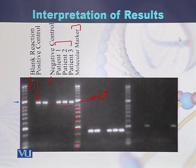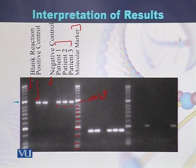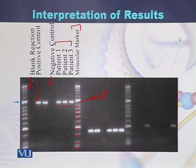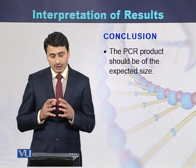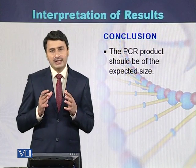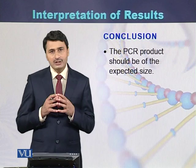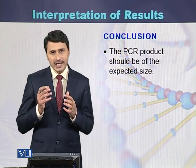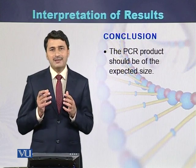While performing a PCR reaction, there should be a blank reaction, a positive control, a negative control, and a molecular marker. These are used to interpret results and verify whether the expected band size matches the required base pair size. The results are according to expectations — the PCR product band size should match what was expected before performing the reaction.